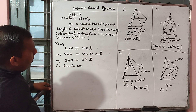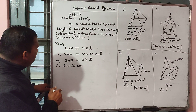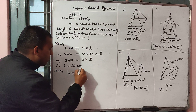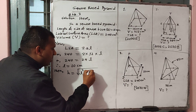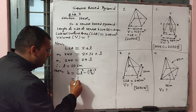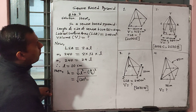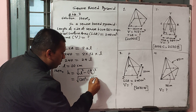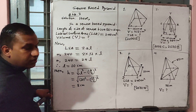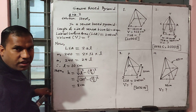After finding the slant height, to find the volume we need the vertical height of the square base pyramid. Vertical height equals square root of L squared minus (A/2) squared. This equals square root of 10 squared minus (12/2) squared, which becomes 8 cm.